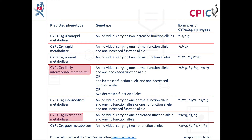CYP2C19 decreased function alleles are poorly characterized, so the size of their impact on CYP2C19 function and drug metabolism is not well understood. As a result, patients carrying decreased function alleles are assigned as either a likely intermediate metabolizer or a likely poor metabolizer. The term 'likely' indicates uncertainty in the phenotype assignment, but it is still reasonable to use the recommendations for the confirmed phenotype — for example, it is reasonable to use the recommendations for CYP2C19 poor metabolizers for a patient assigned as a likely poor metabolizer.